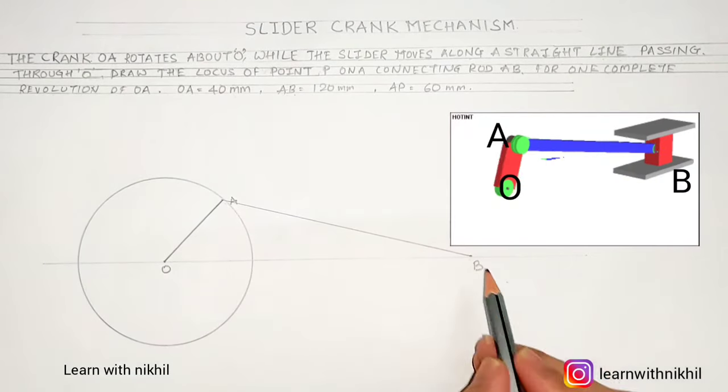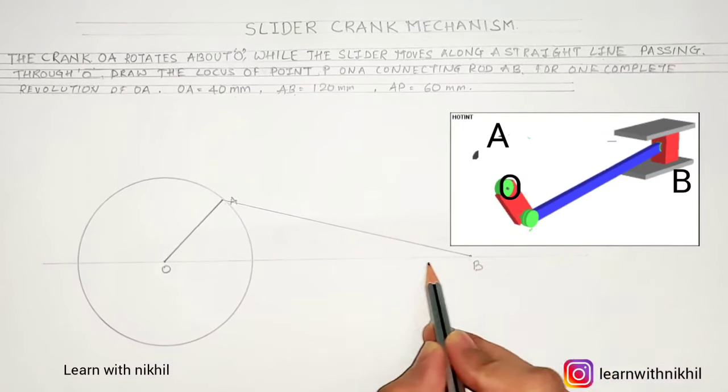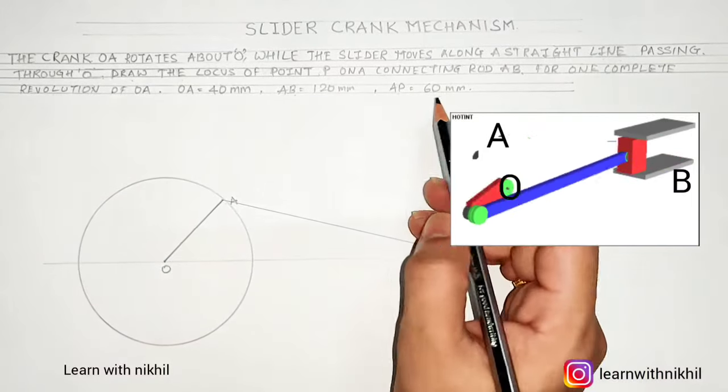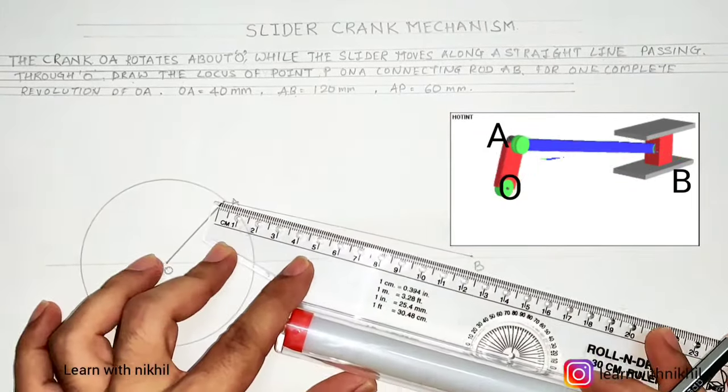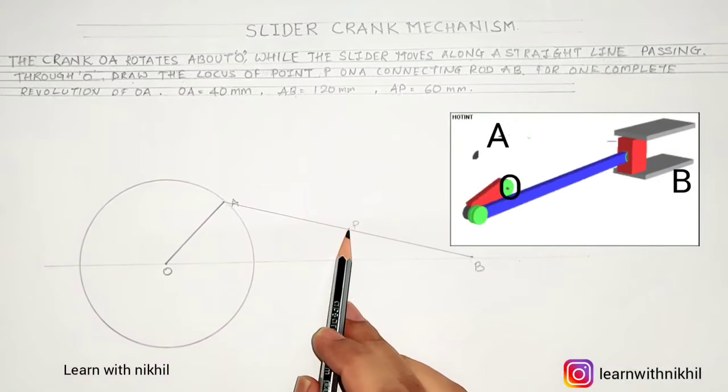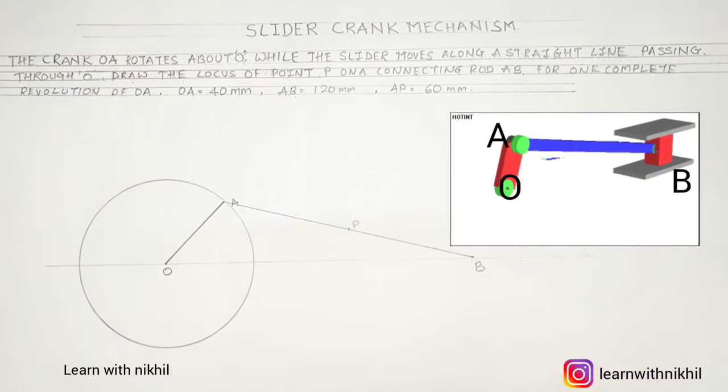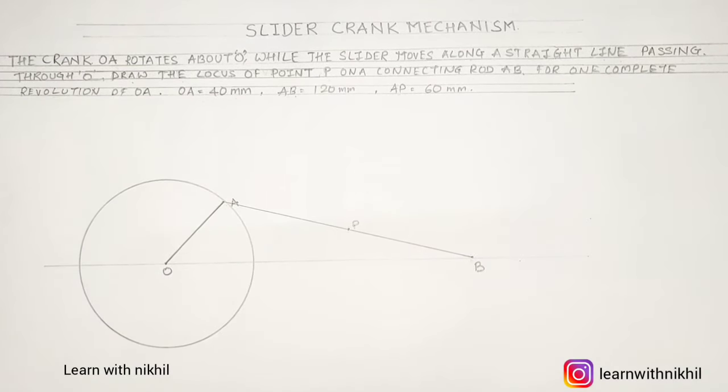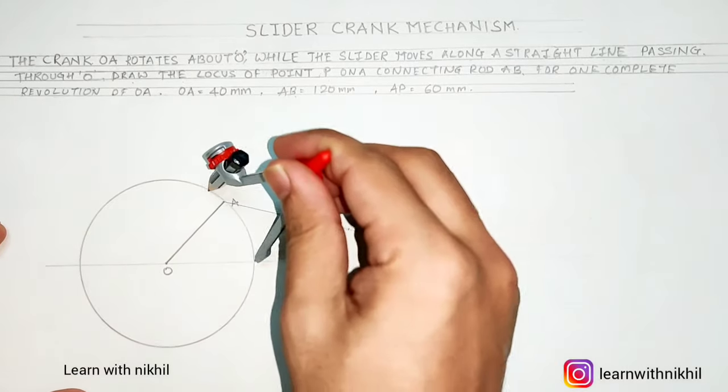B is a slider which moves horizontally, so we can say the locus of point B is nothing but a horizontal line which moves back and forth, as you can see in the GIF also. Now we have to find the locus of point P. Point P is 60 mm, which is located on the rod AB. So the question is, we have to find the locus of point P for one complete revolution.